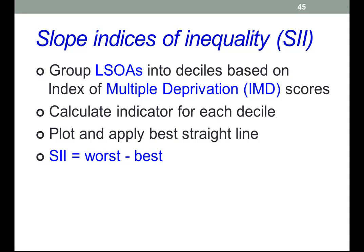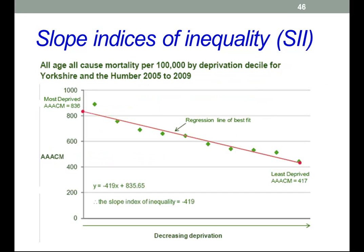It seems very complicated, but really it's just a question of compiling data on a particular metric, such as mortality, mapping that against social factors, and then doing a relatively simple calculation. The people who do this use spreadsheets already set up to do the sums. Here's a graph of all-age and all-cause mortality per 100,000, sorted by deprivation for Yorkshire and Humberside. The data has been plotted for each decile, and a line of best fit has been produced.